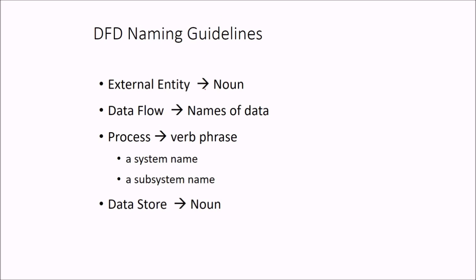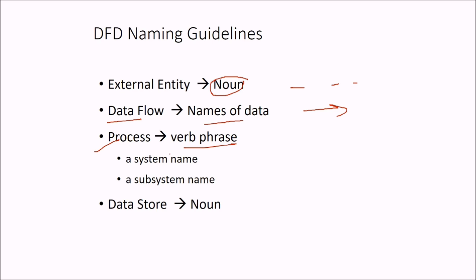These are the DFD naming guidelines. The external entity should be a noun — we find a noun and assign it as an external entity. The names of the data flow use any verb phrase and we account it as a process. That may be a system name or a subsystem name, and again a noun is used for the data store.